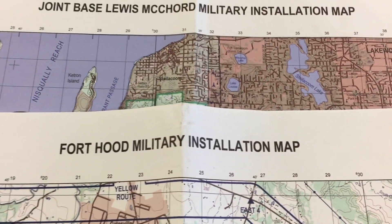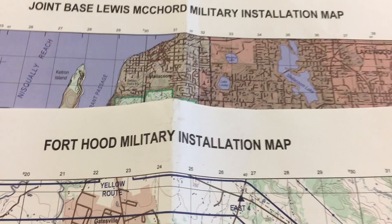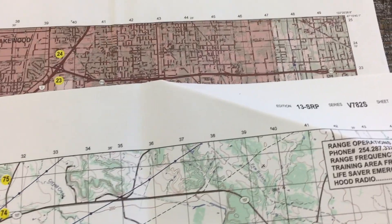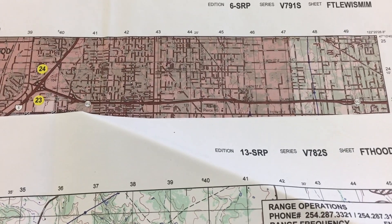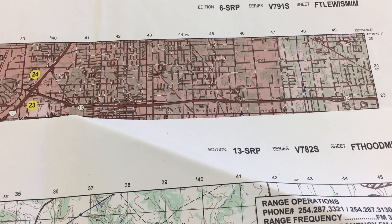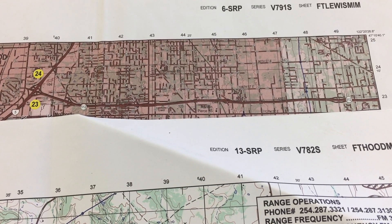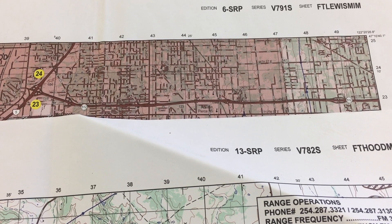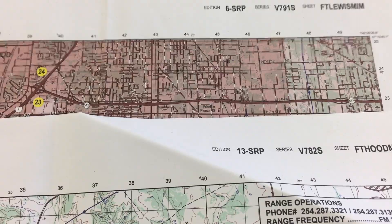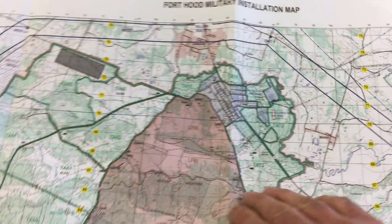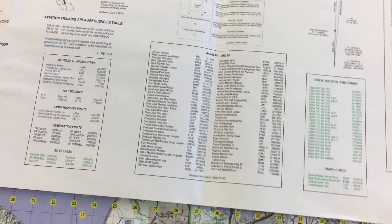Moving towards the center of the map, we have our actual map names. Off to the top right-hand corner, we have edition, series, and sheet information, which is used to identify the map if we need to order more. Now let's flip these maps over and look at all the information on the bottom — there's just a ton of information down there.